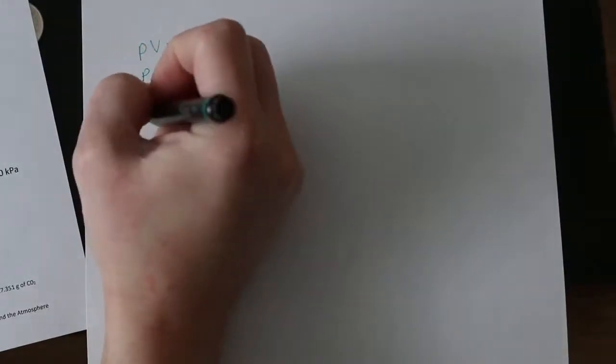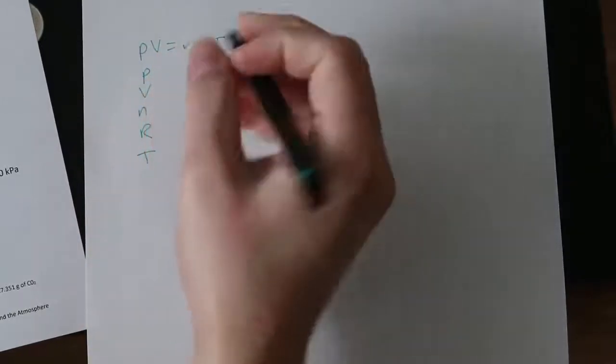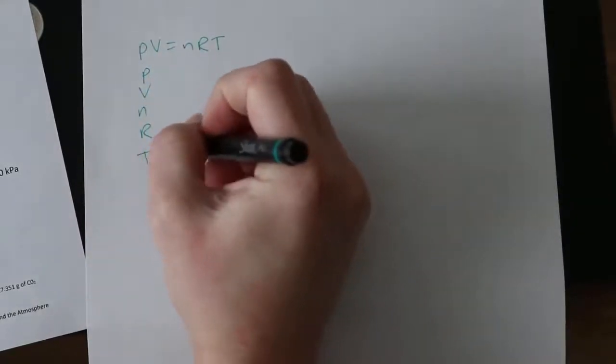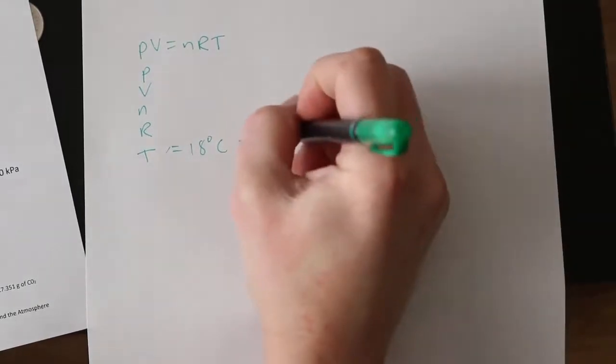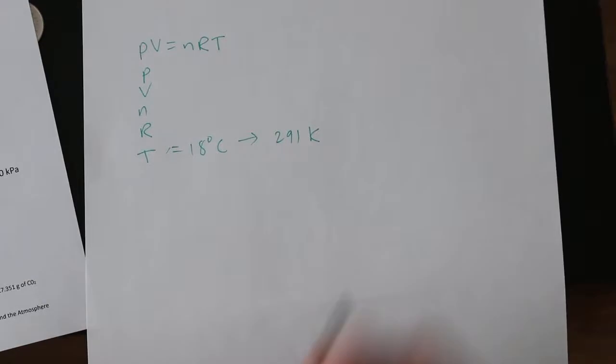So remember, with this equation, it's PV equals nRT. So we need to identify all of these variables. So P, V, N, R, and T. The first thing that we can write down is our temperature, which is 18 degrees Celsius. We have to have the temperature in Kelvin. So remember, to convert degrees Celsius to Kelvin, we add 273. So 18 plus 273 is going to give us 291 Kelvin.